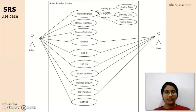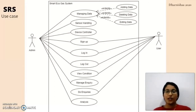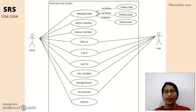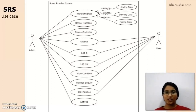I will now explain the SRS for the Smart Echo Gas system. There are two stakeholders: admin and user. The admin will manage data — adding, deleting and editing — as well as sensor handling, device controlling, sign up, sign in, log in, log out, manage inquiries, and analysis. The user will sign up, log in, log out, view the condition, and submit inquiries. Inquiries will be submitted by the user and answered by the admin. Basically, the admin handles all IoT devices, data management, and analysis, while the user simply benefits from the system.